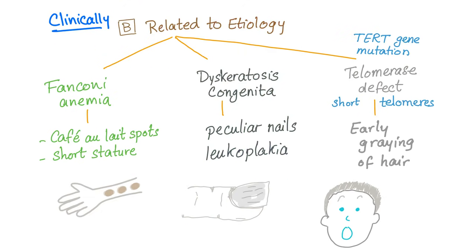Clinical signs and symptoms related to the etiology: if you have Fanconi anemia, you will have short stature and café au lait spots. Also, if you have dyskeratosis congenita, you'll have peculiar nails and leukoplakia. If there is a telomerase defect — maybe a gene mutation, the gene is called TERT — you will end up with short telomeres, and the symptom will be early graying of hair. You have a young patient and his or her hair is gray.